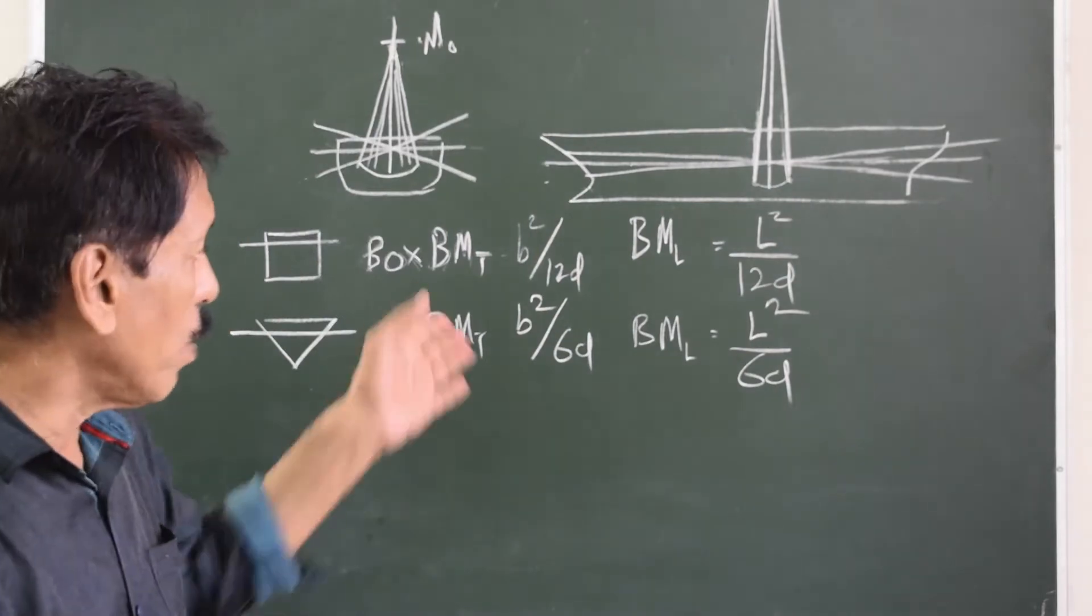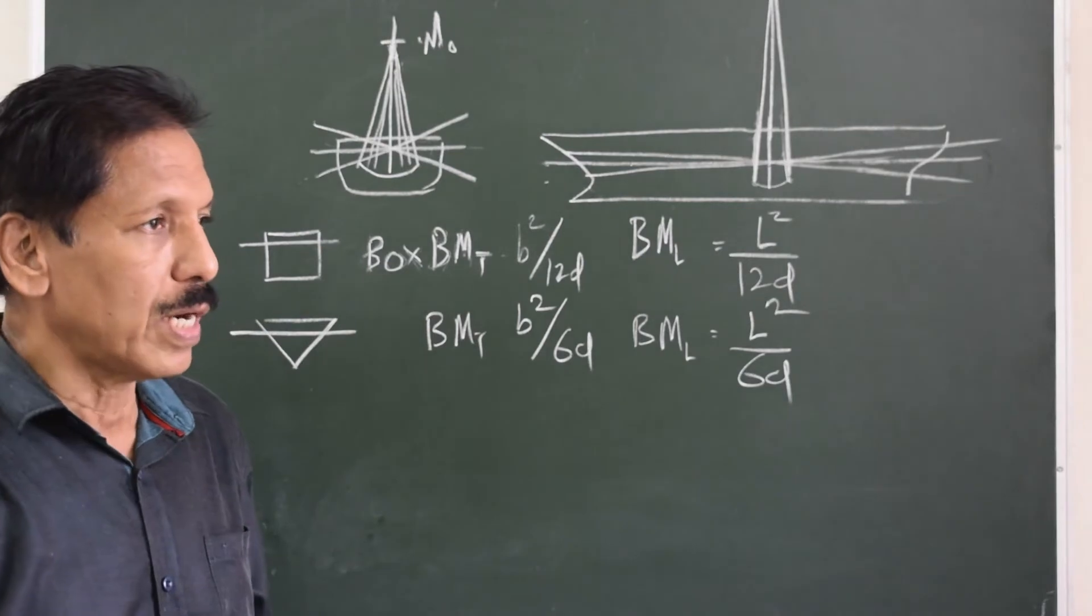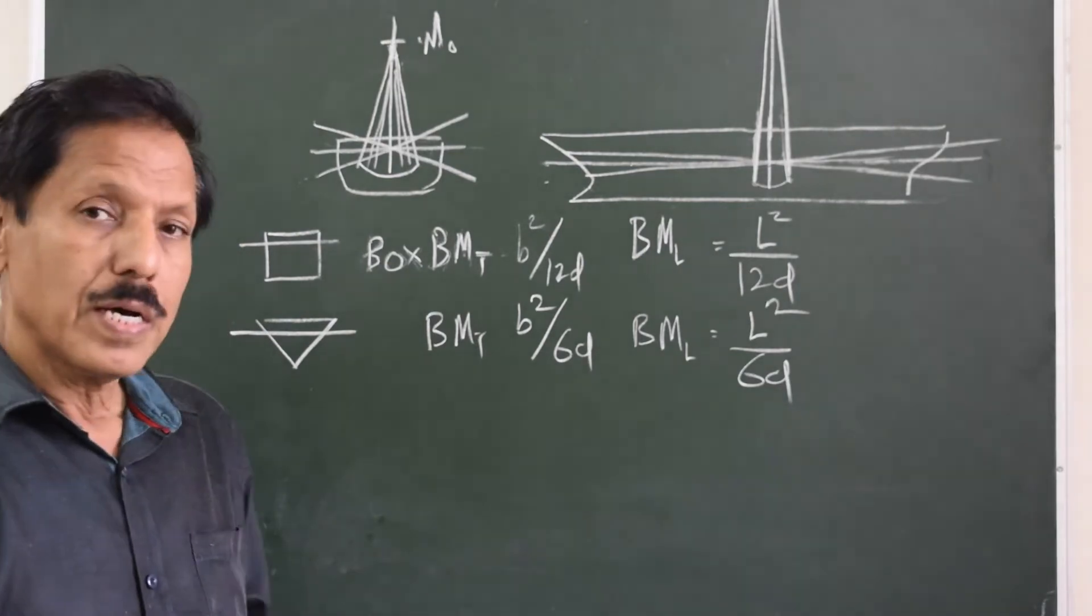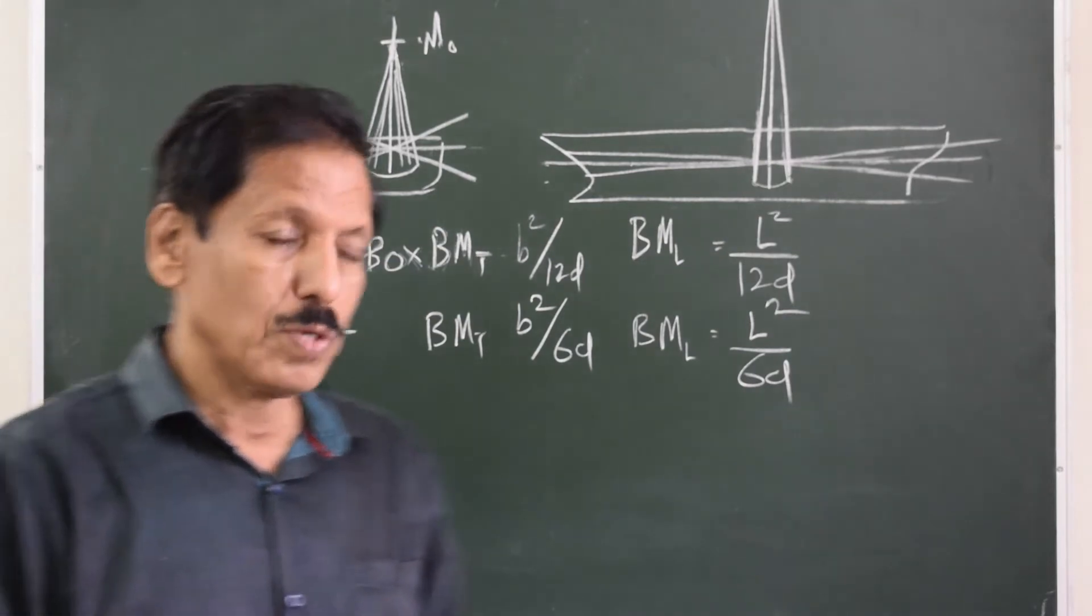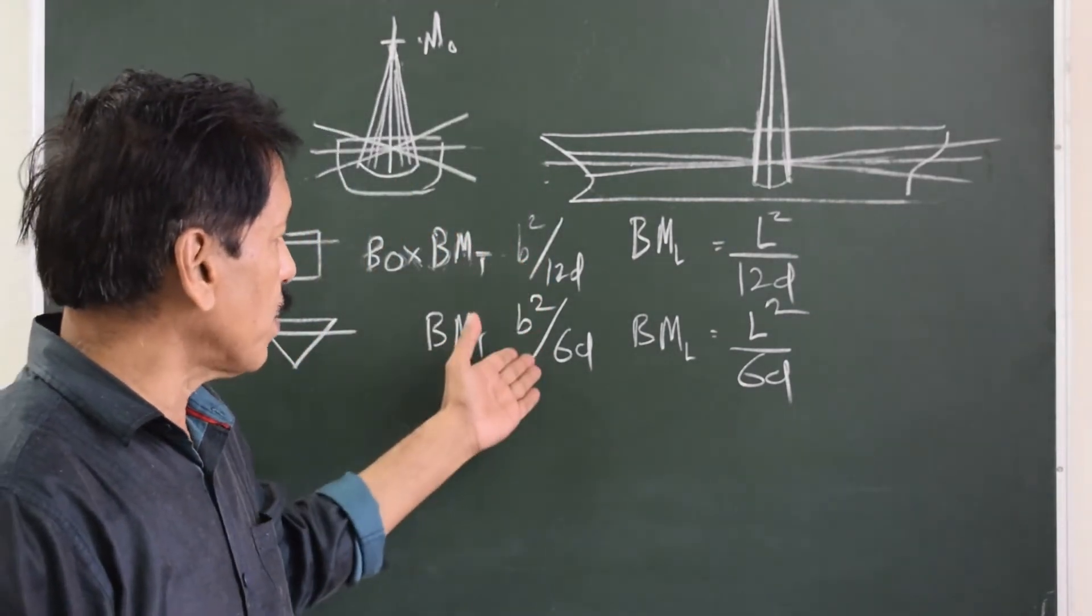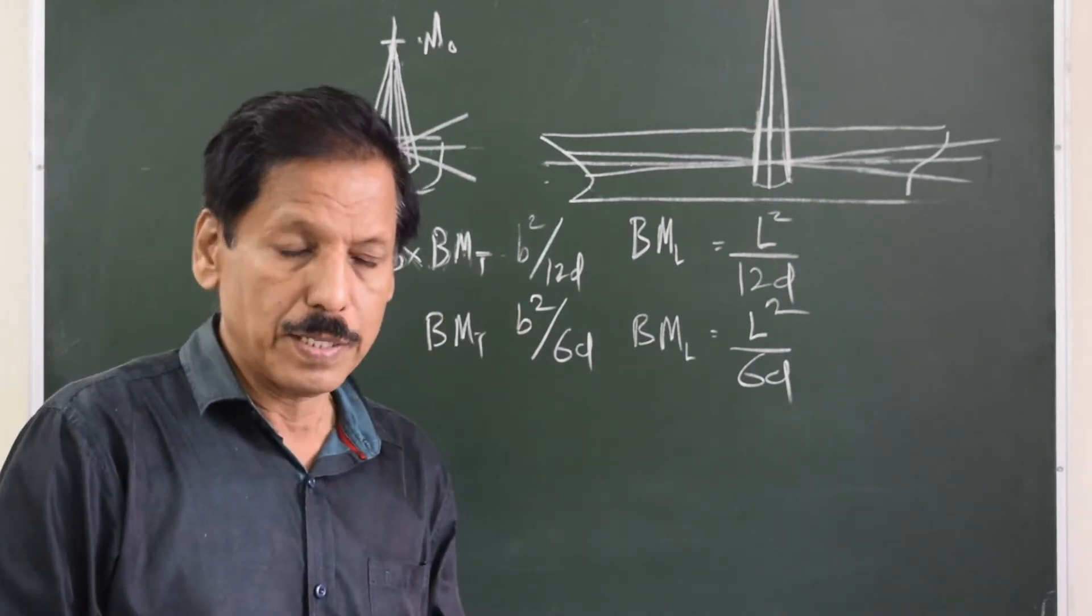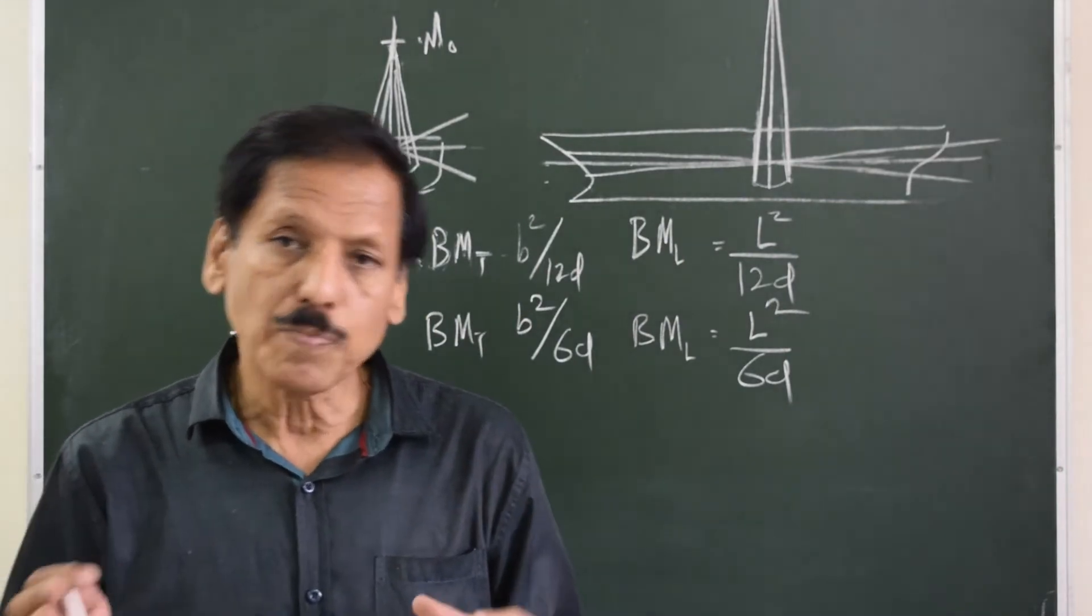Now in both these types of ships, what is common is the transverse underwater section is uniform. And on such a ship you have seen that the transverse stability parameters are independent of length.